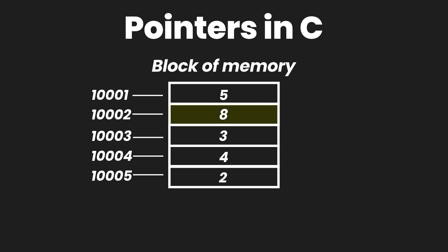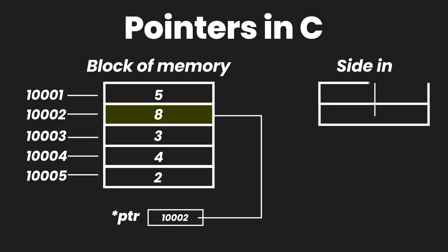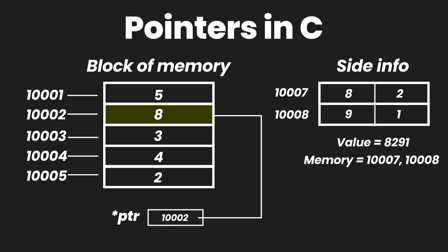If we were to create a pointer to point to the value 8 in memory, then that pointer variable will have the following memory address inside it. As you can see, we have this pointer variable ptr and it has the address of the memory block 1002, which points to the value 8. The address stored in the pointer is always the base address of that memory location — meaning if a value takes up two blocks in memory, the pointer contains the starting address, not the whole address, of that particular memory location.